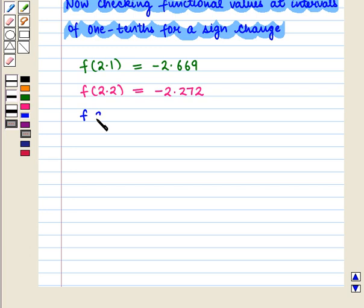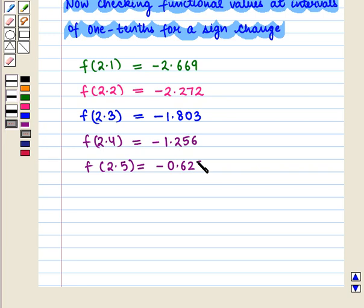Now, f(2.3) is given by -1.803. f(2.4) is equal to -1.256. f(2.5) is equal to -0.625. f(2.6) is given by 0.096.